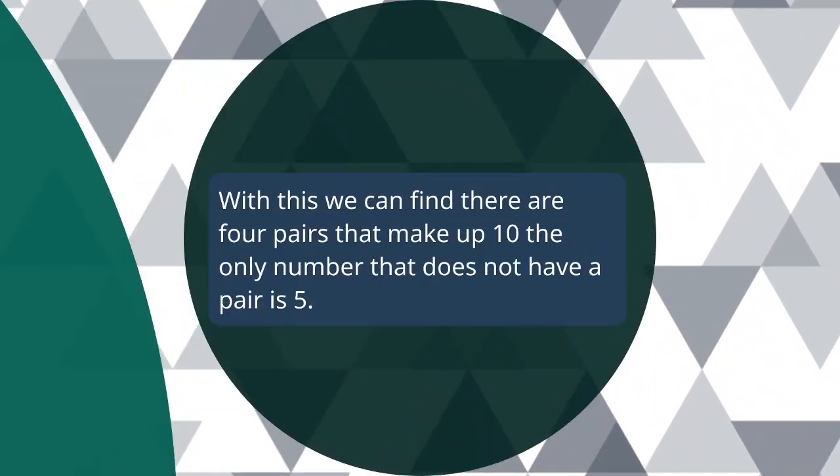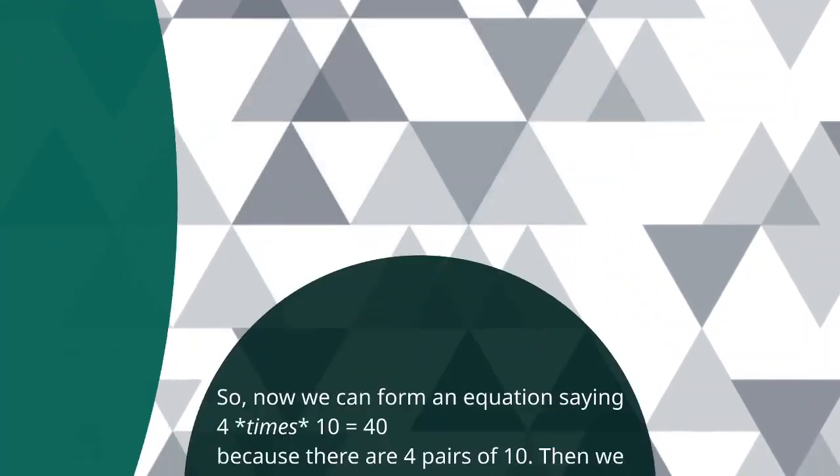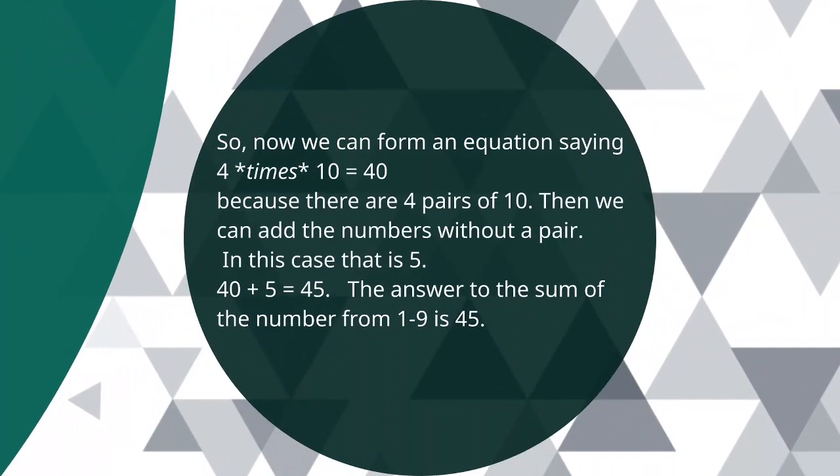With this, we can find there are 4 pairs that make up 10. The only number that does not have a pair is 5. So now we can form an equation saying 4 times 10 equals 40 because there are 4 pairs of 10. Then we can add the numbers without a pair. In this case, that is 5. So 40 plus 5 equals 45. The answer to the sum of the numbers from 1 to 9 is 45.